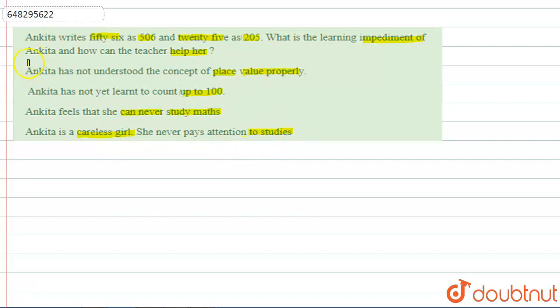Let's examine the options. First, Option D says Ankita is a careless girl who never pays attention to studies. If we talk about a student, we can never criticize the student. We never know the potential of a student. Based on these temporary mistakes like 506 and 205, we can't say she is careless. This is not true.